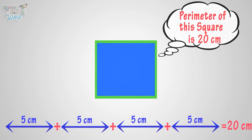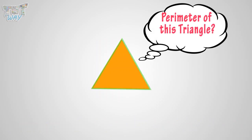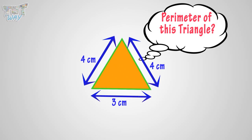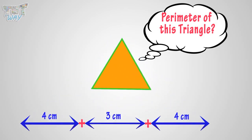Let's take one more example — can you find the perimeter of this triangle? Let's add the lengths of all sides. Yes, you get 11 centimeters. So the perimeter of this triangle is 11 centimeters. Good!